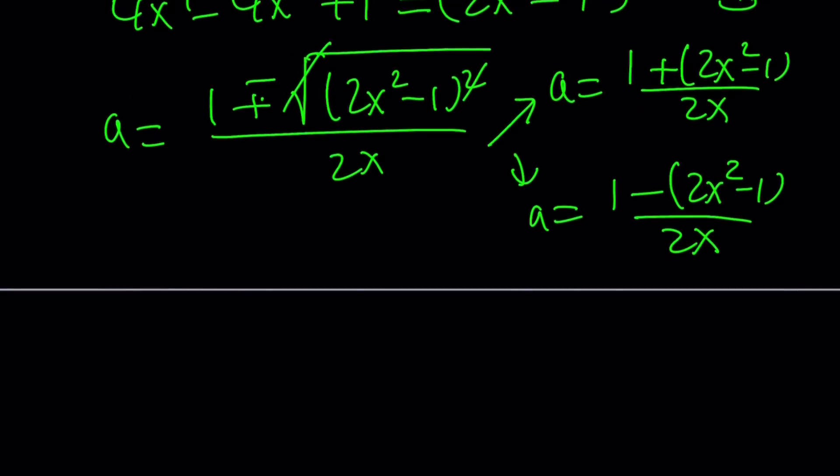So now, if you simplify the first part, 1 is going to cancel out. That's fairly simple. 2 is going to cancel out. x is going to cancel out. So you're going to end up with something as simple as a equals x, which is cool. The second one is going to give you a equals (1 plus 1, which is 2), by the way.